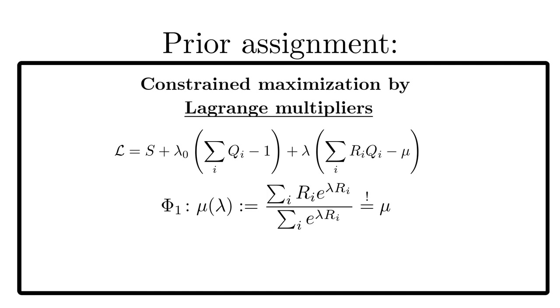We cannot solve that in a closed form, but the result can be obtained easily by numerical means. The behavior of mu of lambda can be estimated qualitatively. In the limit lambda to minus infinity, only the r equal to one term survives, resulting in mu equal to one. And in the opposite case, lambda going to infinity, only r equal to five survives, leading to mu is equal to five.